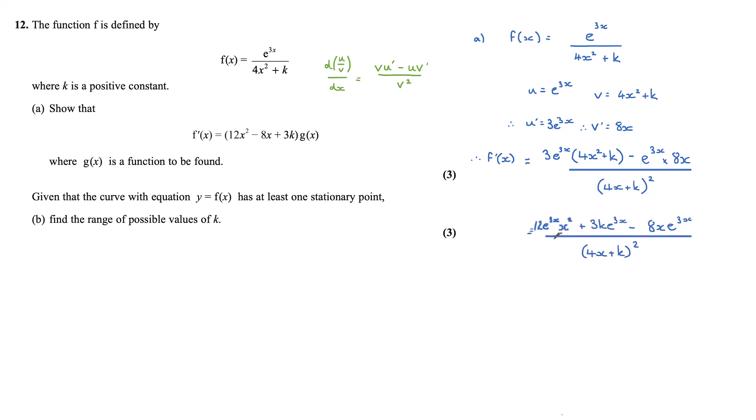Expanding the bracket here, we've got 12e^(3x)x² plus 3ke^(3x) minus 8xe^(3x) all over (4x² + k)².